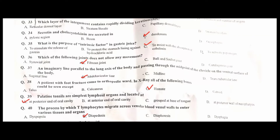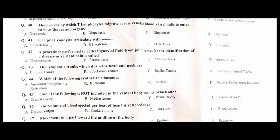Occipital condyles articulate with the C1 vertebra — A is the correct option. A procedure performed to collect synovial fluid from a joint space for identification of disease or relief of pain is arthrocentesis — C is the correct option. The lymphatic trunk that drains the head and neck is the jugular trunk — C is the correct option.